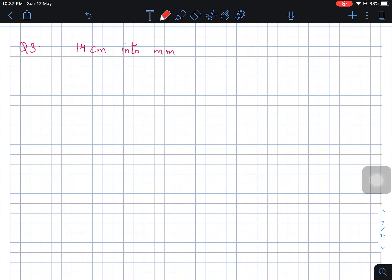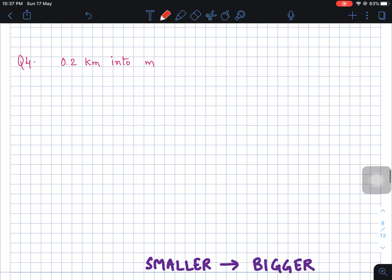Now 14 cm to mm. We know that 1 cm is equal to 10 mm. So you multiply both: 14 cm is equal to 14 times 10 mm, so 140 mm is the answer.